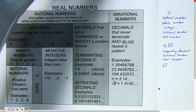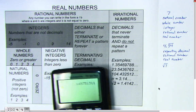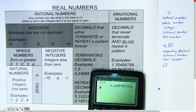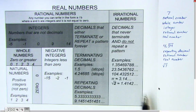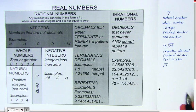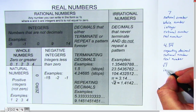Now let's look at the square root of 7. If we take a calculator and find the square root of 7, we get 2.645751311, and it continues. The actual value never ends and does not repeat a pattern. So the square root of 7 is an irrational number.